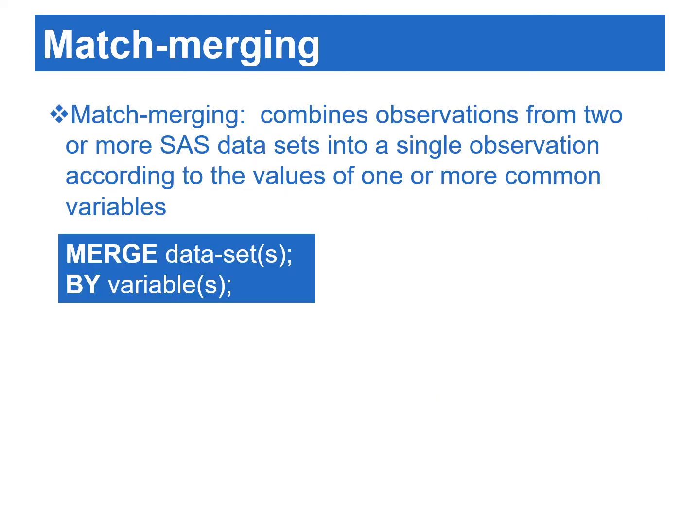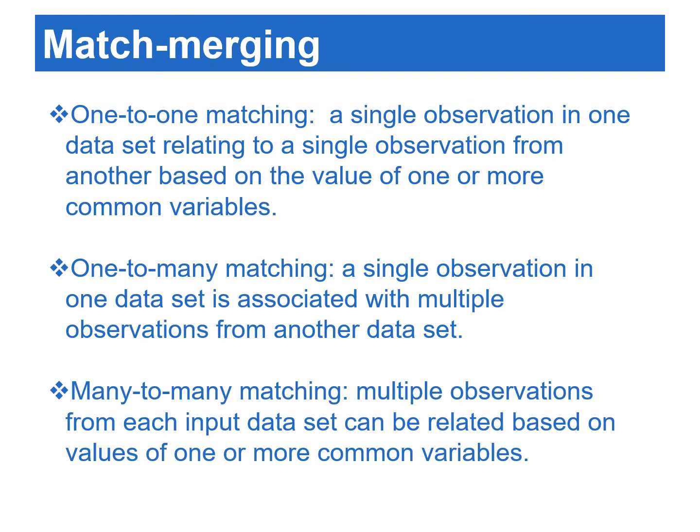Match merging is the most common method to combine data sets horizontally. It combines two or more SAS data sets into a single observation according to the values of one or more common variables. The number of observations in the combined data set equals the sum of the largest number of observations in each by group among all the input data sets. The data sets can be related by one-to-one, one-to-many, or many-to-many matching of the values of one or more variables.